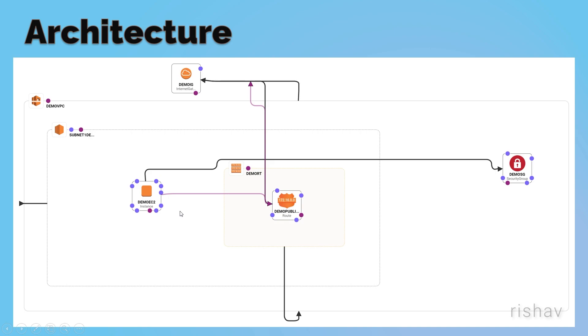Security groups define which ports we want to open and which ports we don't want to use. This is the basic architecture which we'll be working on.